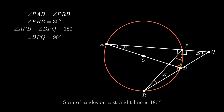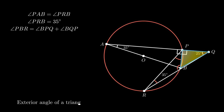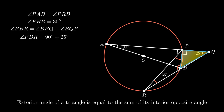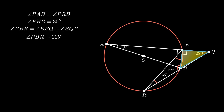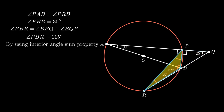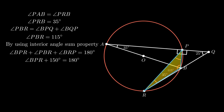Now in triangle PBQ, angle PBR equals the sum of angle BPQ and angle BQP, as the exterior angle of a triangle equals the sum of the interior opposite angles. On simplification, we get angle PBR equals 115 degrees. To find angle BPR, using the interior angle sum property in triangle BPR, we get angle BPR equals 180 degrees minus 150 degrees, which is equal to 30 degrees.